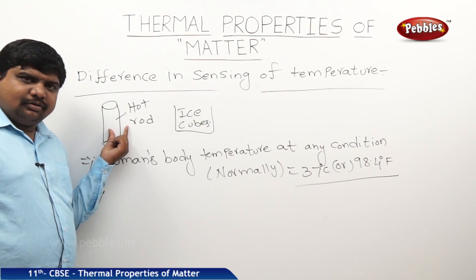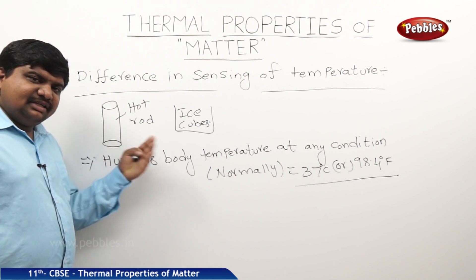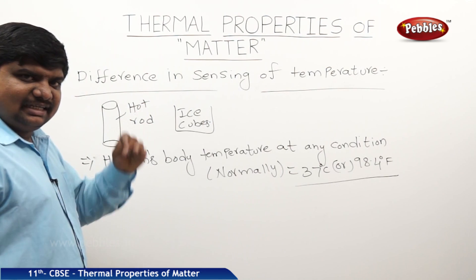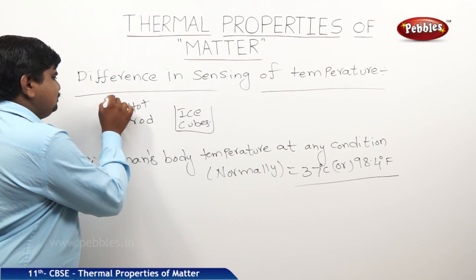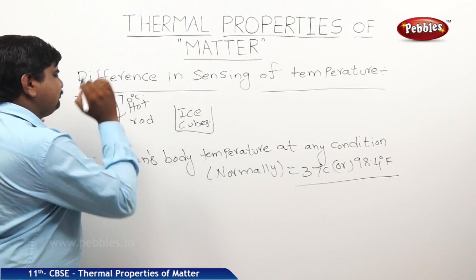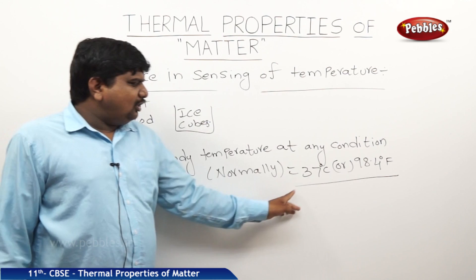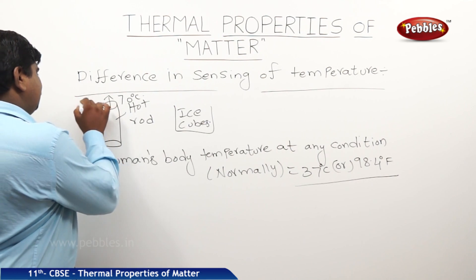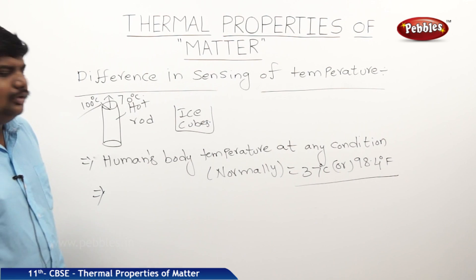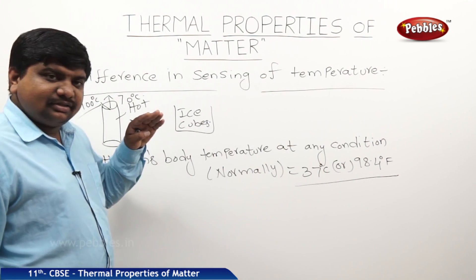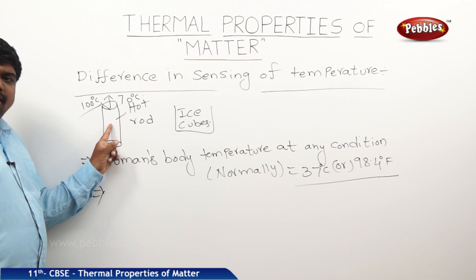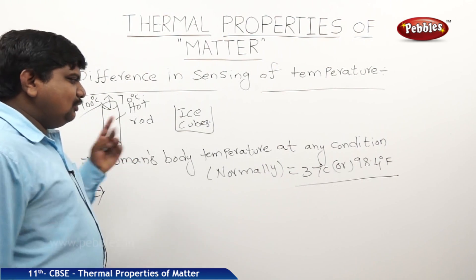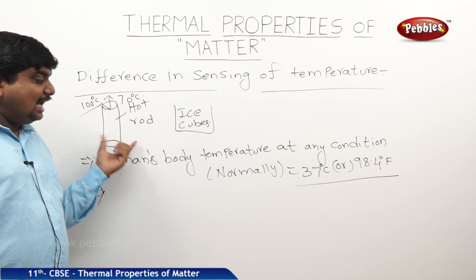If the metal rod placed under the hot sun increases in temperature rapidly — because metal is a good conductor of heat energy — it may heat up to 60 to 70 degrees Celsius or even 100 degrees Celsius. The human body's temperature is 37 degrees Celsius, while this hot rod is at 100 degrees Celsius. In the relative comparison, we can say the hot rod is hotter than the human body.